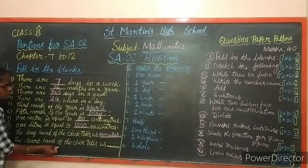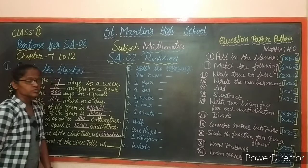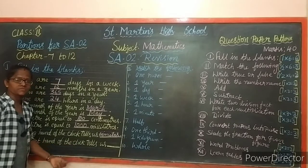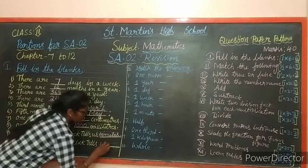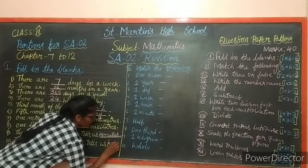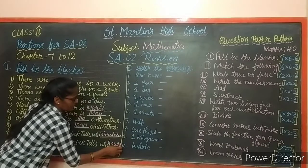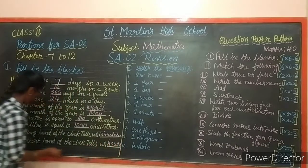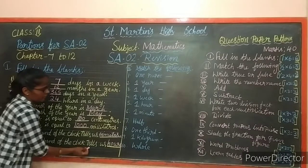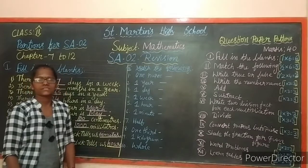Next: the short hand of the clock tells dash. What does the short hand say? Hours. The short hand of the clock tells hours.